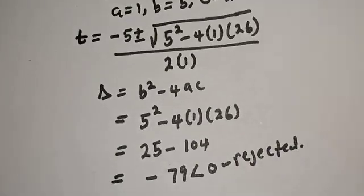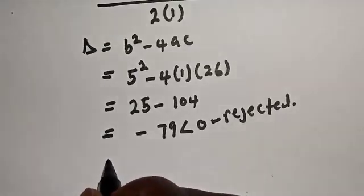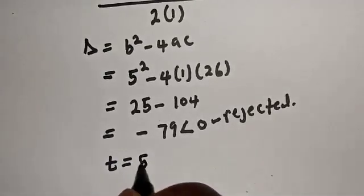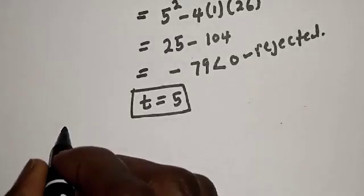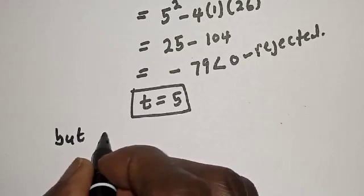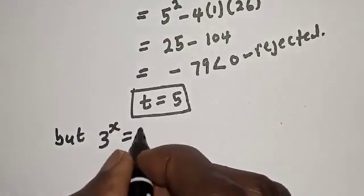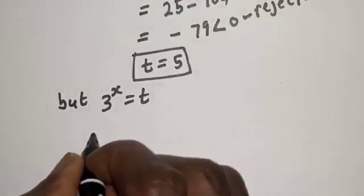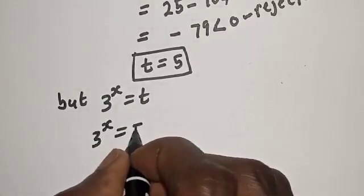The only solution we have is t equals 5. But 3 raised to power s equals t, so 3 raised to power s equals 5.